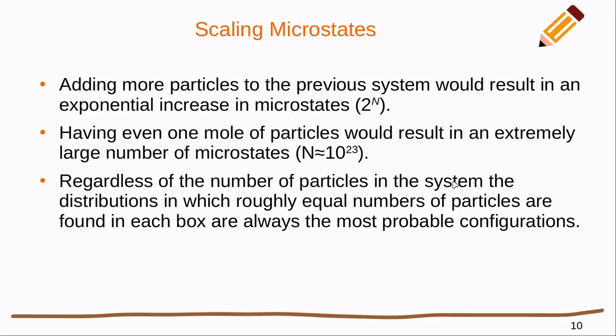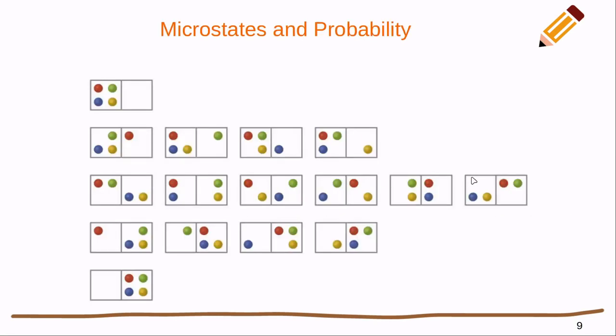Regardless of the number of particles in the system, the distributions in which roughly equal number of particles are found in each box are always going to be the most probable configuration. We're always going to see this equal distribution in this same pattern arise. Not only that, as you have more and more particles, a single particle moving from one box to the other starts to have less of an effect. We get a whole distribution where the vast majority of the microstates is going to be centered around a fairly even distribution.